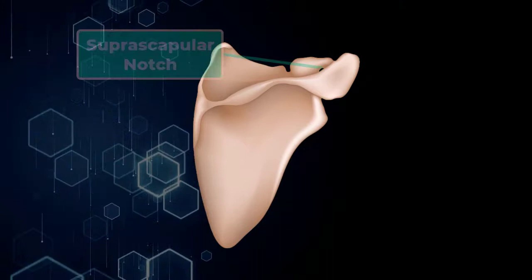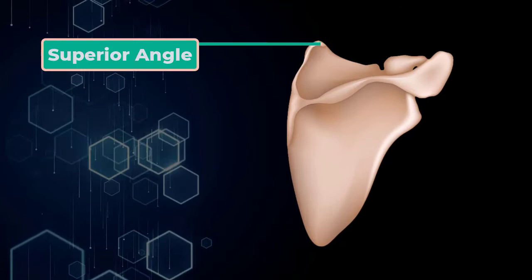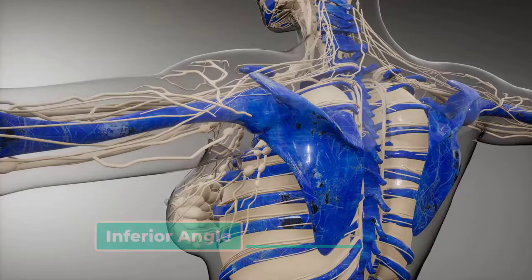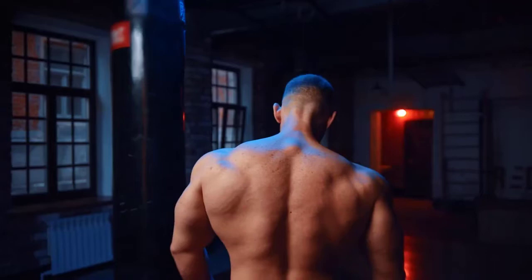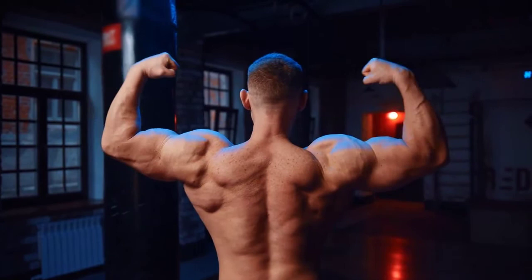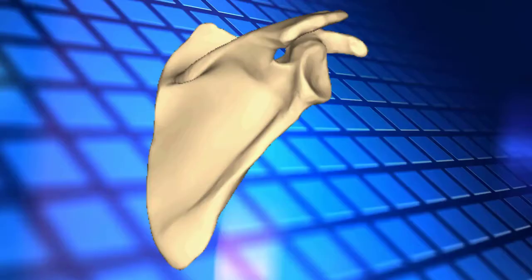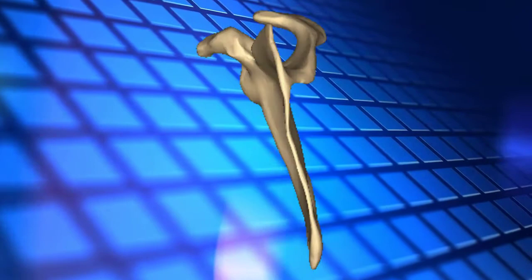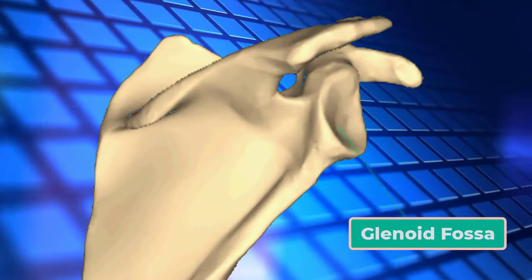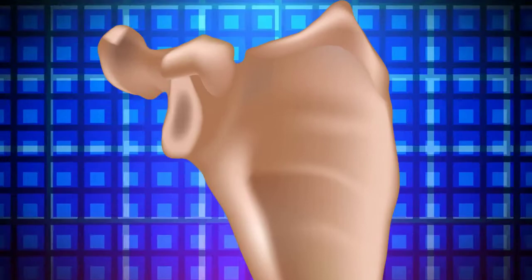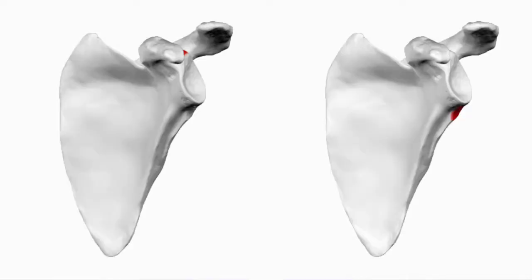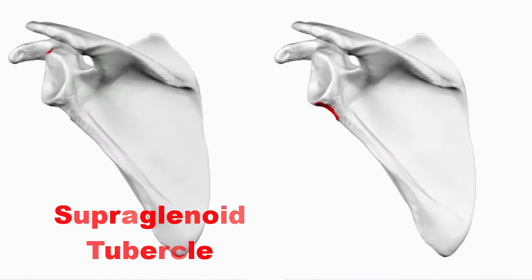The corners of the triangular scapula at either end of the medial border are the superior angle of the scapula and the inferior angle of the scapula. The inferior angle of the scapula is the most inferior portion and is particularly important because it serves as attachment points for several powerful muscles involved in shoulder and upper limb movements. The remaining corner of the scapula, between the superior and lateral borders, is the location of the glenoid cavity or glenoid fossa. This shallow depression articulates with the humerus bone of the arm to form the glenohumeral joint. The small bony bumps located immediately above and below the glenoid cavity are the supraglenoid tubercle and the infraglenoid tubercle.